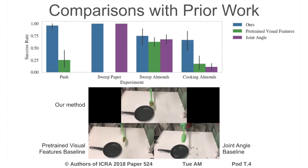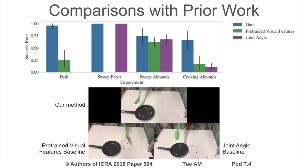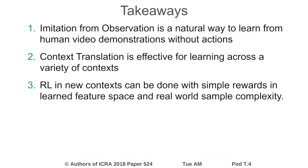Please refer to our poster for more detailed results and experiments in simulation as well as the real world. In this work, we found imitation from observation to be a natural way for learning in the absence of actions from raw videos of human demonstrations in a variety of contexts. We found that context translation was an effective approach for accounting for variations in the environment. Using a well-structured translation model, we designed simple rewards that operate effectively in real-world environments. Thank you very much for watching.